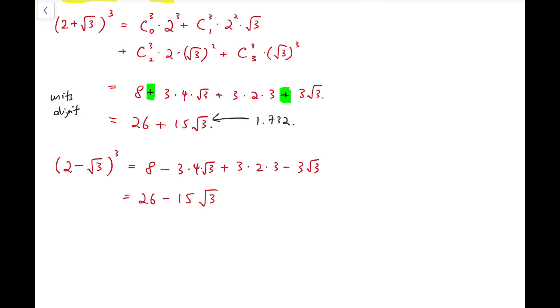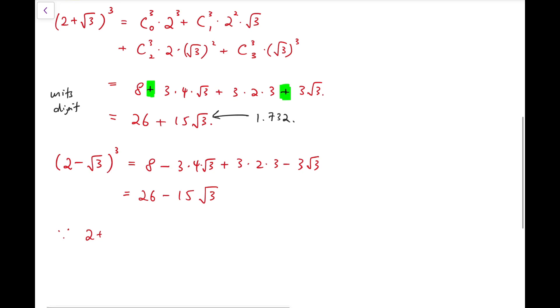Now the next part of the trick is to add them up. And you'll get 26 + 26 while the square roots cancel out, and so we get 52. Also, because this number 2 - √3 is clearly a very small one, well, it's around 0.268, and if it's brought to its cube, then it's even smaller because it's a number between 0 and 1.